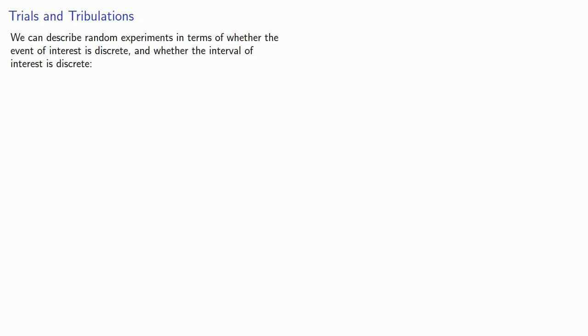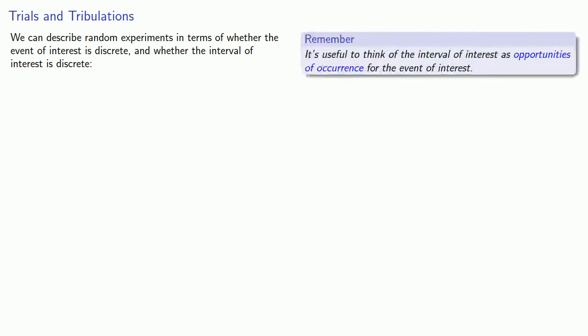We can describe random experiments in terms of whether the event of interest is discrete, and whether the interval of interest is discrete. It's useful to think of this interval of interest as opportunities of occurrence for the event of interest — when the event of interest can occur.